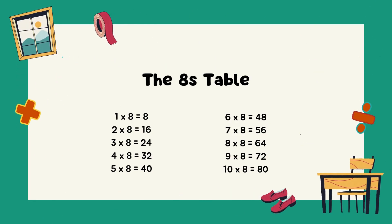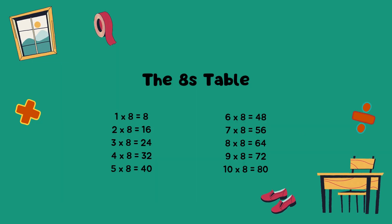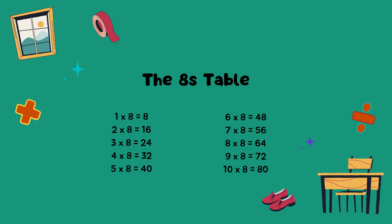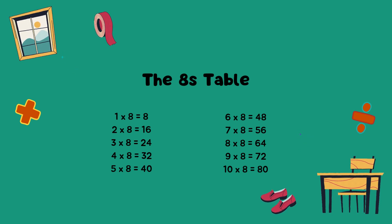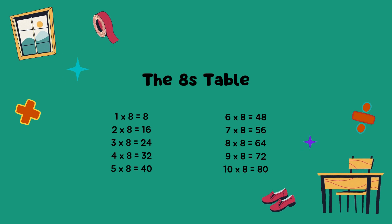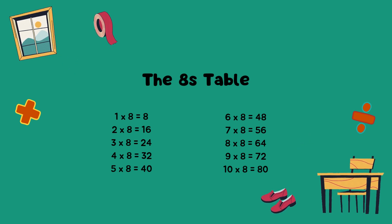The eights table. 1 times 8 equals 8. 2 times 8 equals 16. 3 times 8 equals 24. 4 times 8 equals 32. 5 times 8 equals 40. 6 times 8 equals 48.